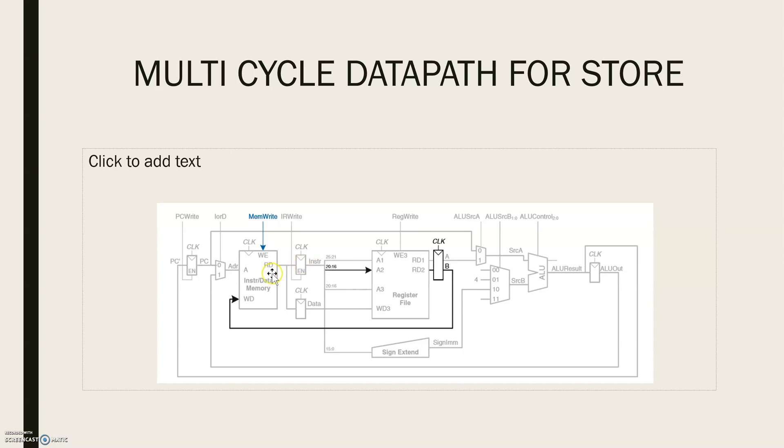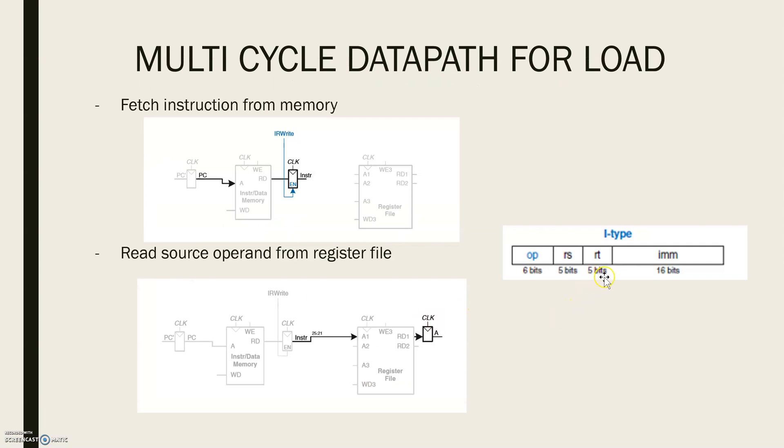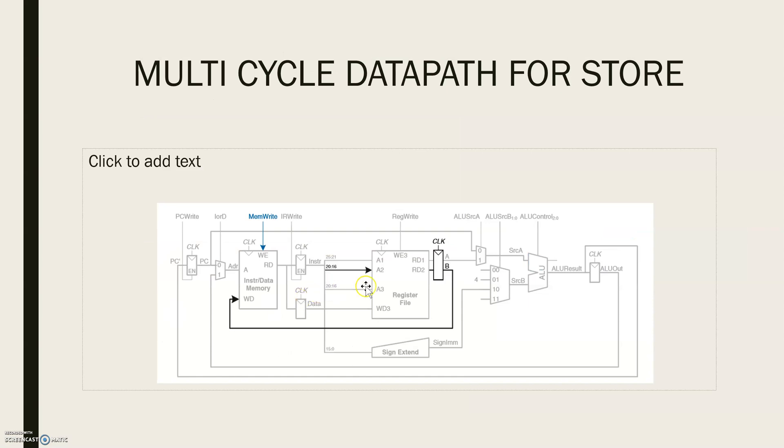The only new feature of store is that we must read a second register from the register file and write it to memory. The register is specified in the RT field of the instruction, bits 16 to 20, which is connected to the second port of the register file. When the register is read, it is stored into a non-architectural register B. On the next step it is sent to the write data port of the data memory to be written, and the memory receives a MemWrite control signal to indicate that the write should occur.